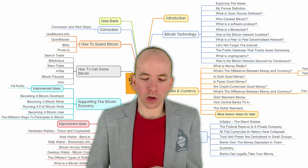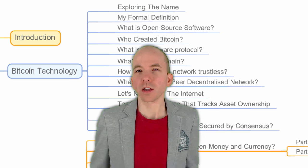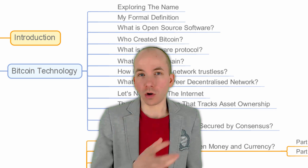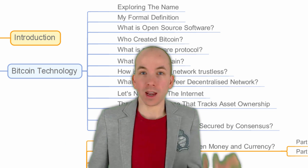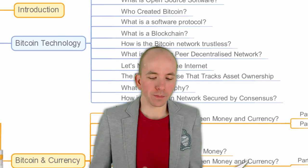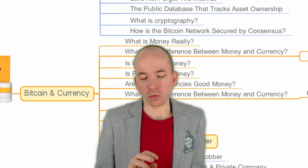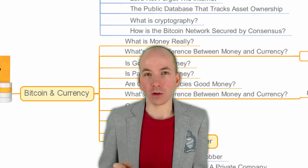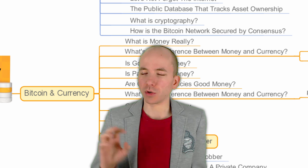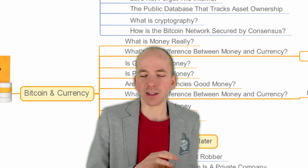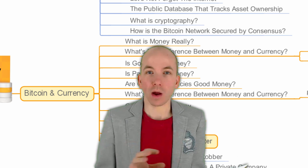We're going to go through first of all the Bitcoin technology, because there are two aspects to Bitcoin: there's Bitcoin the technology that supports the whole thing, and then there's Bitcoin the currency and all the fantastic things that the network enables. After Bitcoin technology we'll go through Bitcoin and currency, and in that module we'll take a trip through some economic concepts. The beautiful thing about Bitcoin is it brings together technology, the internet, and money and economics.